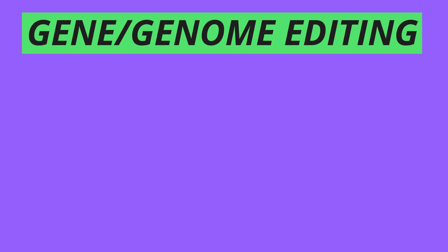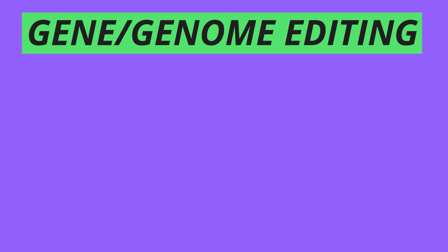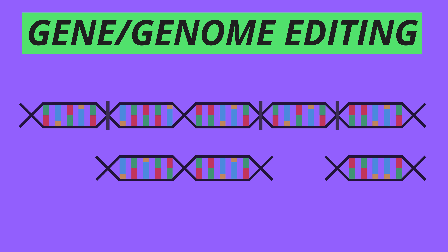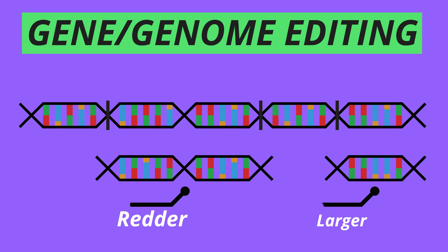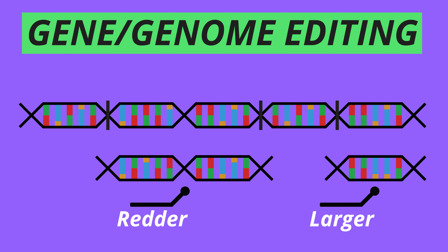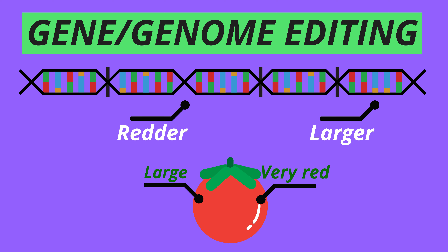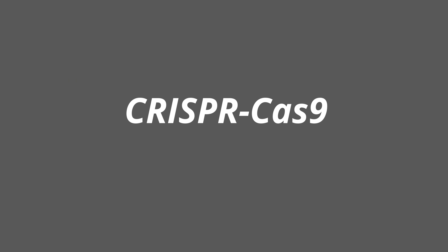Gene editing is a more recent advancement that allows for more intentional and accurate changes in the instruction manual, or genome, and consequently, in the organism's characteristics. So now, if I know which genes are responsible for making a tomato redder and larger, I can simply change the instruction manual directly, and thus bring these traits to the tomato plant. Perhaps the most popular method of gene editing is known as CRISPR-Cas9.